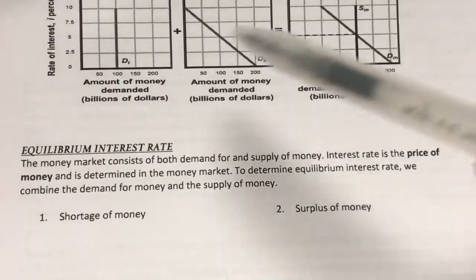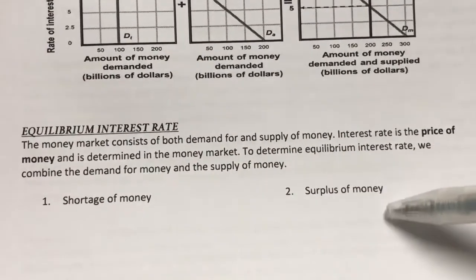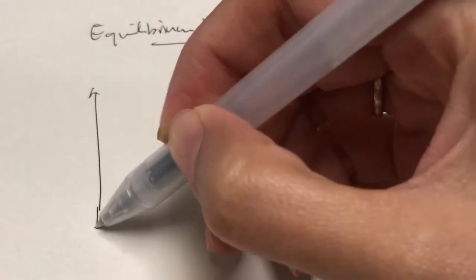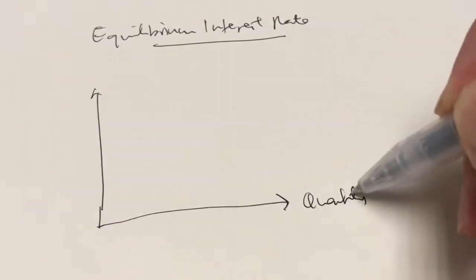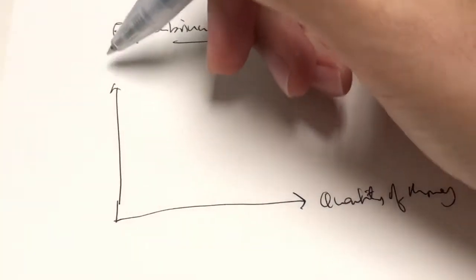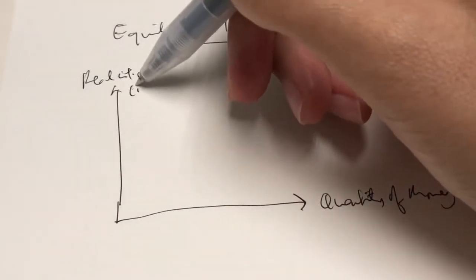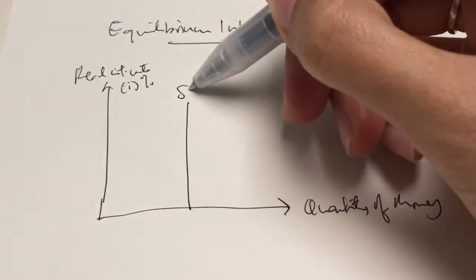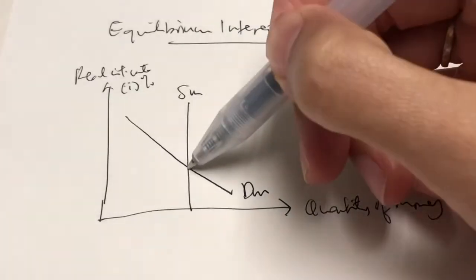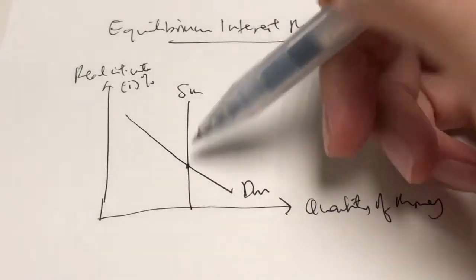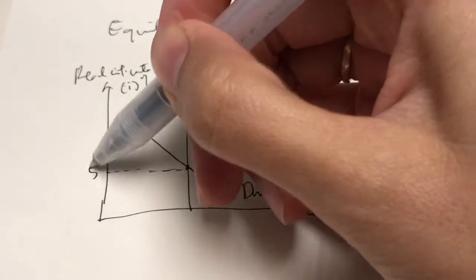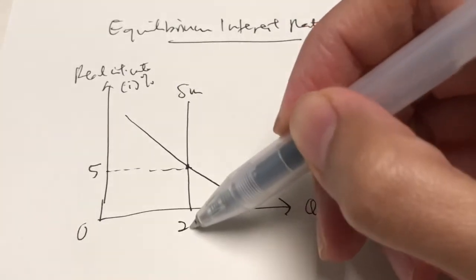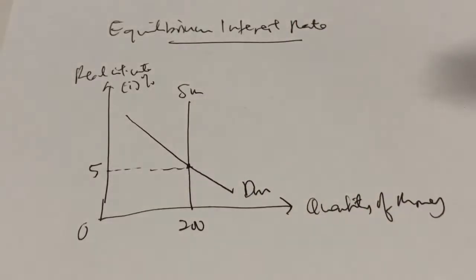I'm going to show you what happens to the equilibrium interest rate when there's a shortage of money or a surplus of money. To see how the equilibrium interest rate changes, we start with an MT diagram — here is the quantity of money, and here is our real interest rate expressed as a percentage. So here is the supply of money and here is the demand for money. At the intersection point, this is our first equilibrium interest rate, let's say at 5%, with an equilibrium money supply of $200 billion.